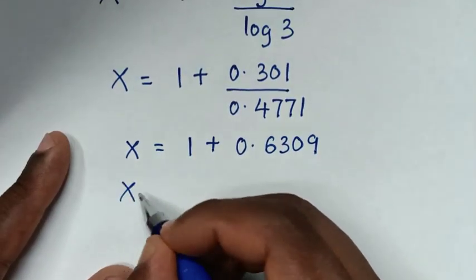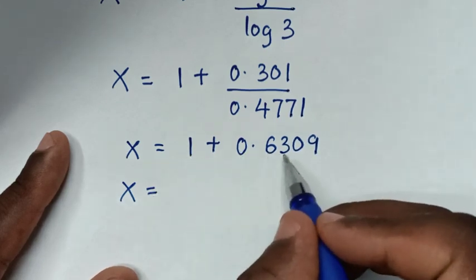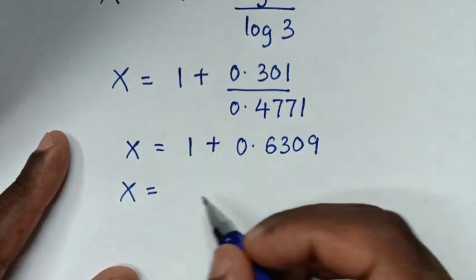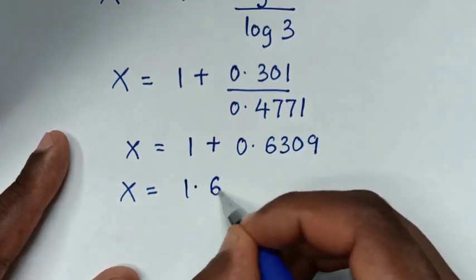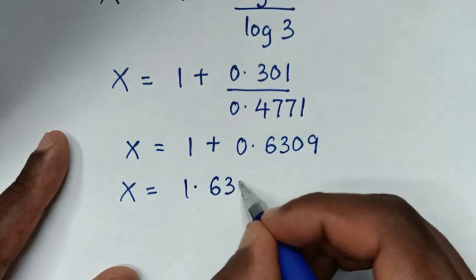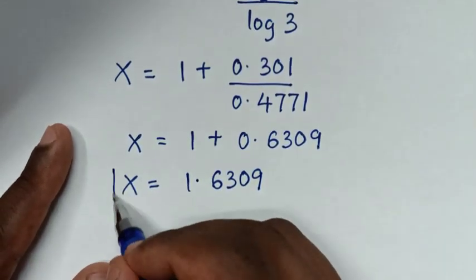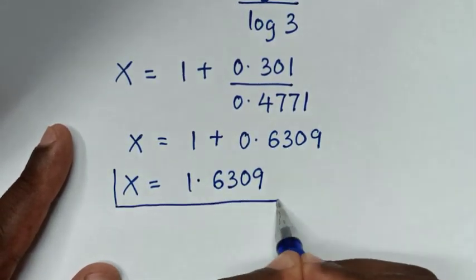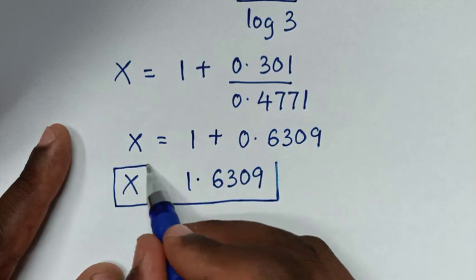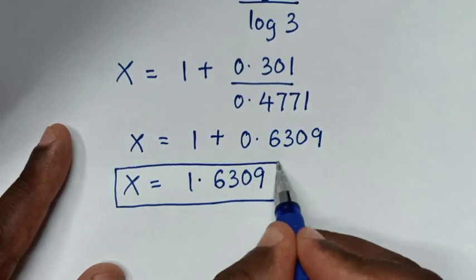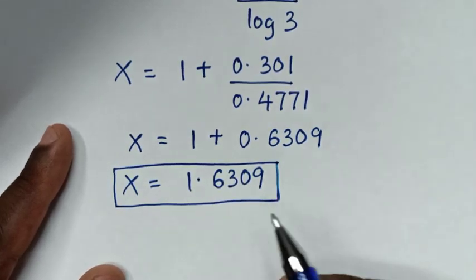Then it will be x is equal to 1 plus 0.6309, which is 1.6309. Therefore this is the final answer for the value of x in this problem: 1.6309.